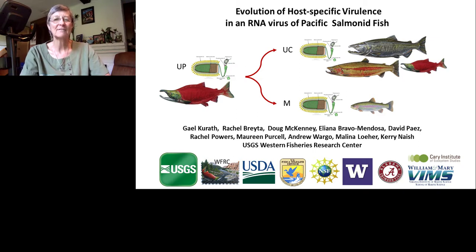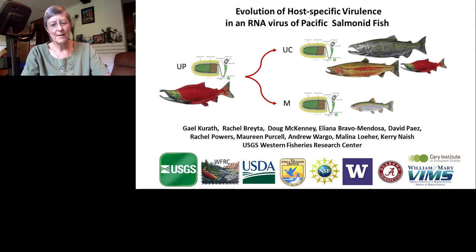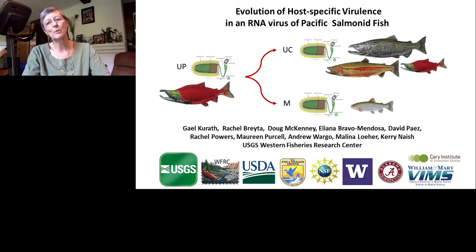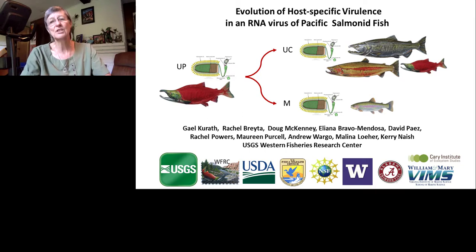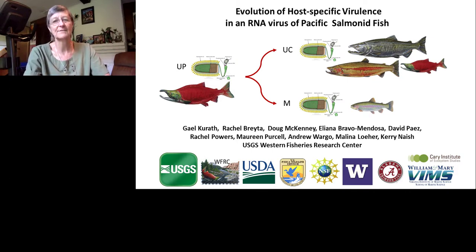We're looking at host specificity and virulence of a virus in Pacific salmonid fish — meaning salmon and trout. For many of you that may be an unusual set of hosts, but I live in Seattle on the west coast of North America where Pacific salmon are extremely important. They're a big part of the healthy ecosystem, they're important economically because we eat them and rear them in hatcheries and farms, and they're also really important culturally as an iconic symbol of our region.